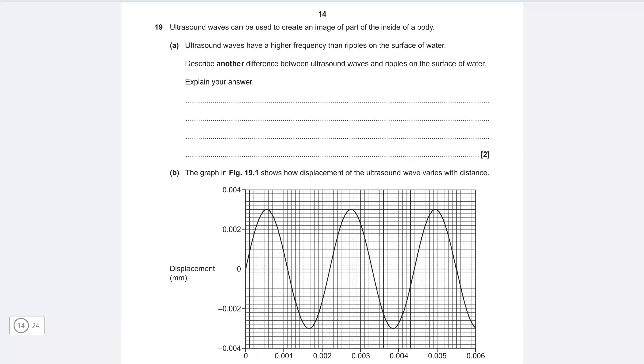Next one ultrasound waves can be used to create an image and ultrasound waves have a higher frequency than ripples on the surface of water describe another difference between ultrasound waves and the ripples of the surface of the water and explain our answers. Okay now the first thing that comes to mind is that ultrasound is a type of sound so ultrasound waves are longitudinal and that means that the oscillations of the particles are parallel to the direction of energy transfer.